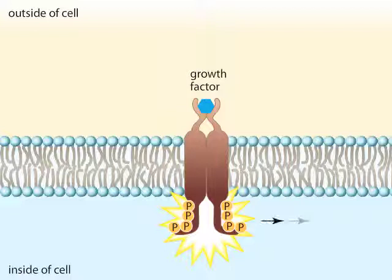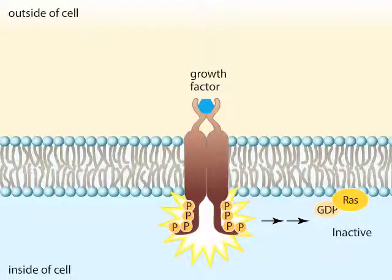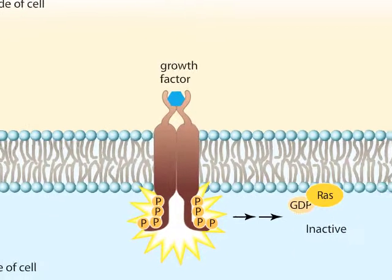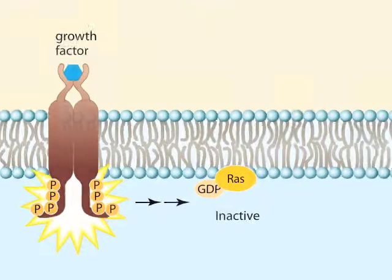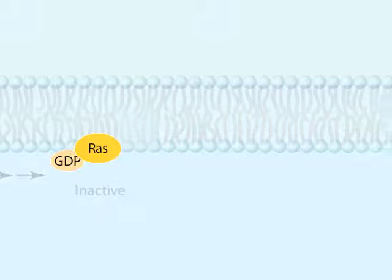In the first steps of the pathway, the activated receptor initiates a series of events that allow a small G-protein called RAS to become activated. G-proteins are a family of guanine nucleotide binding proteins. RAS, like other G-proteins, functions as a binary switch.